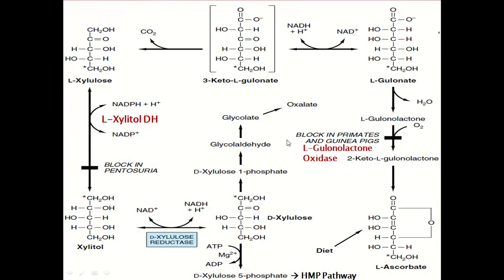L-glucuronate has two fates: one leading to the pentose sugar xylose, and the second toward ascorbate. The ascorbate pathway does not occur in human beings because humans lack the enzyme L-gulonolactone oxidase, which is required for the synthesis of ascorbic acid. Since this enzyme is absent, ascorbic acid or vitamin C cannot be synthesized in human beings; it occurs only in lower animals.